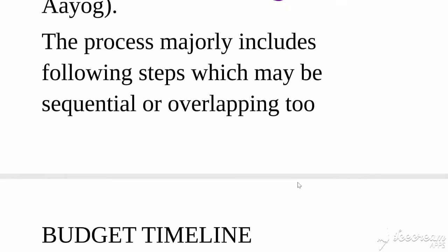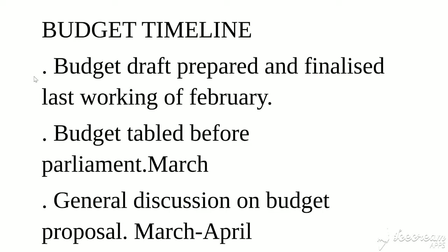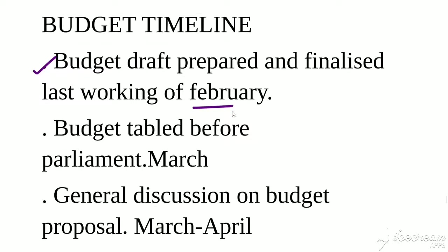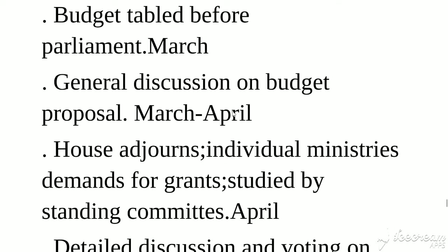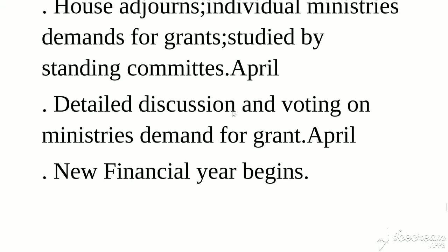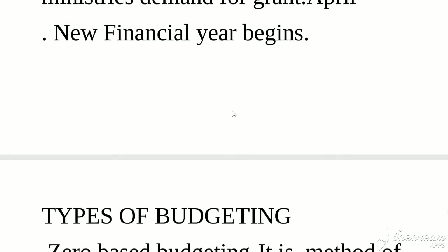Regarding the budget timeline: first, the budget draft is prepared and finalized on the last working day of February. Then the budget is tabled before parliament in March, before the next fiscal year starts on 1st April. General discussion takes place on the budget proposals. Then individual ministries' demands for grants are studied by standing committees, detailed discussion occurs, and voting on ministries' demands takes place before the new financial year begins.